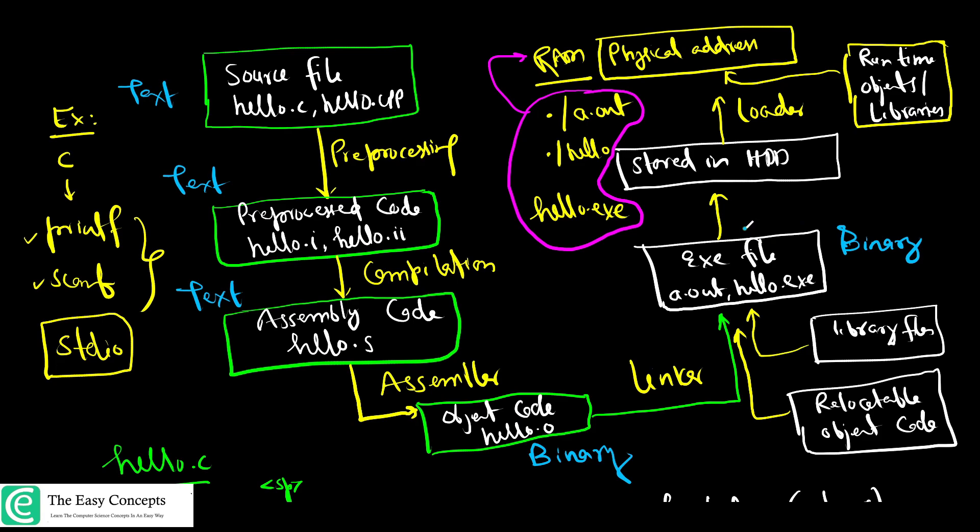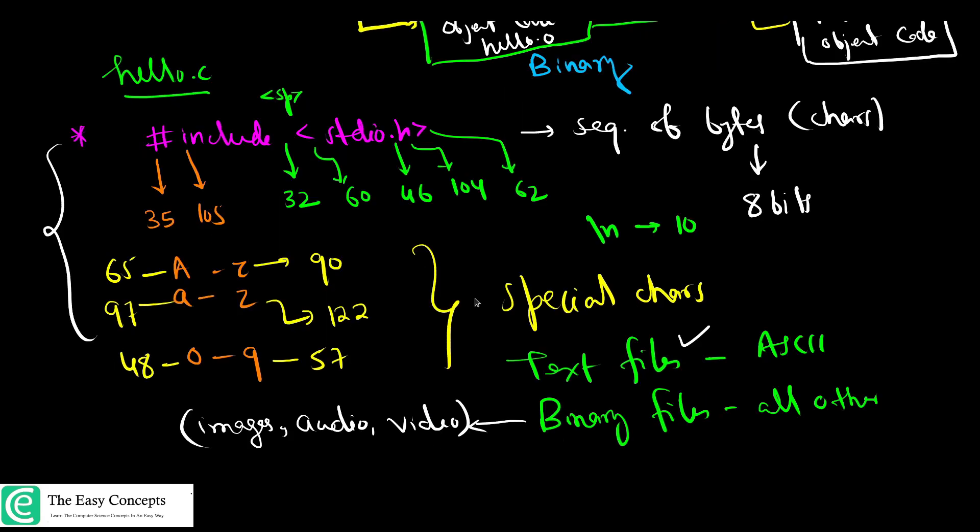I hope now you are well aware of the process of conversion of a source file to executable code, ASCII code, binary files, and how a source file is represented in ASCII format. This is internal representation of a C file or C++ file. I am basically talking about C and C++ programming languages here. But some other programming languages also behave in a similar way.